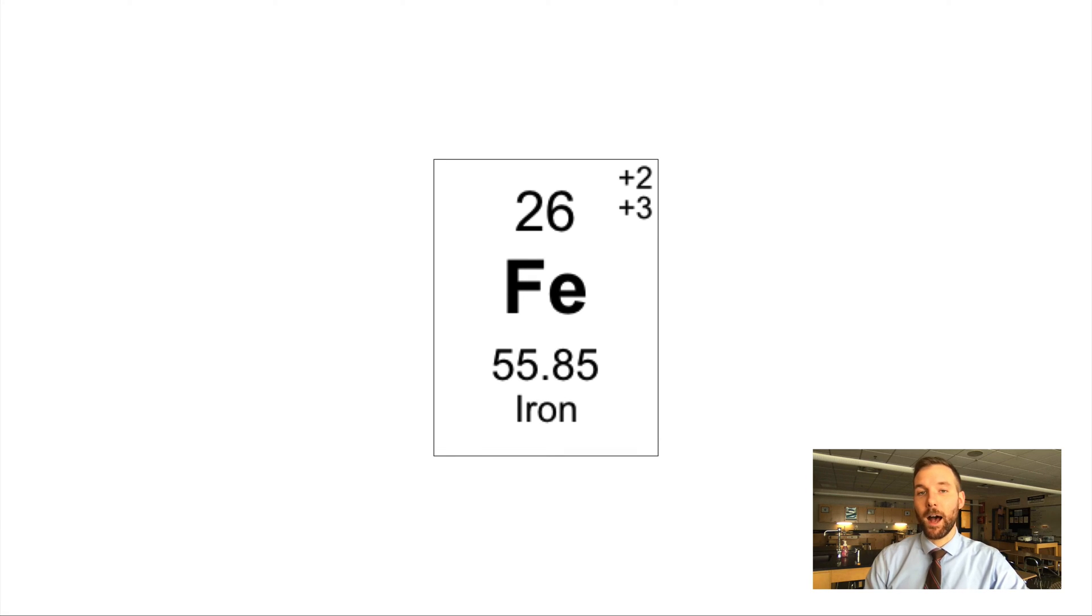Let me give you an example of what a multivalent metal is. Iron—in your reference table's periodic table, you'll see in the top right corner there are possible charges that some transition metals and post-transition metals can form.